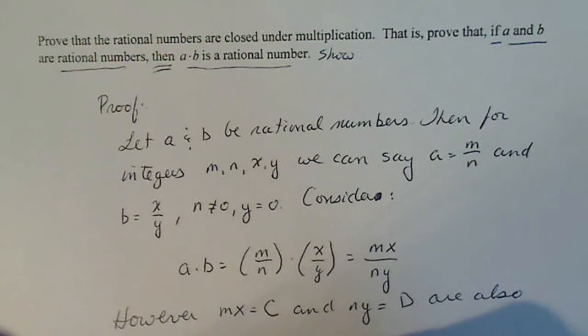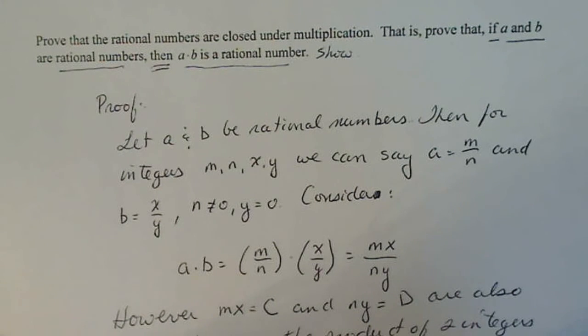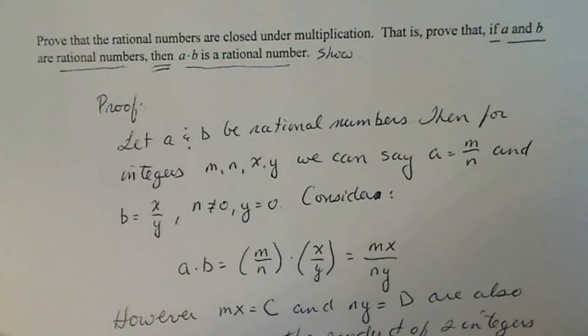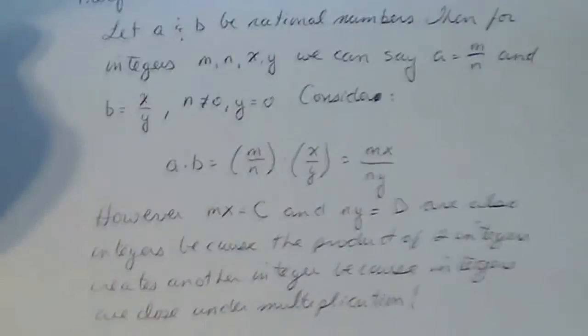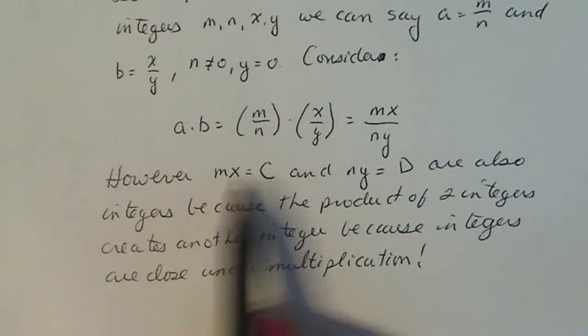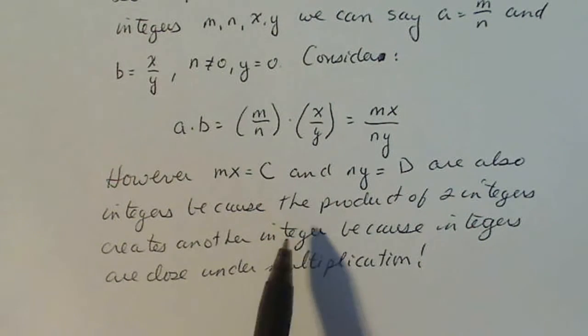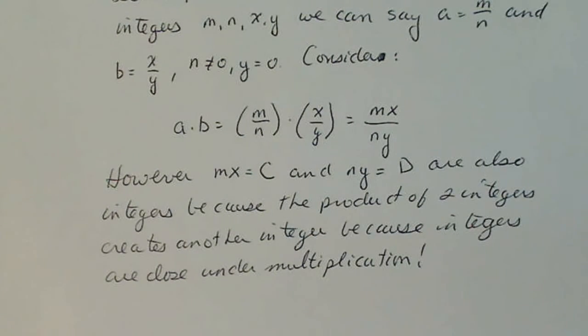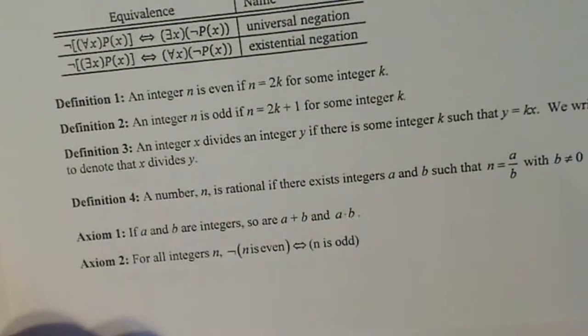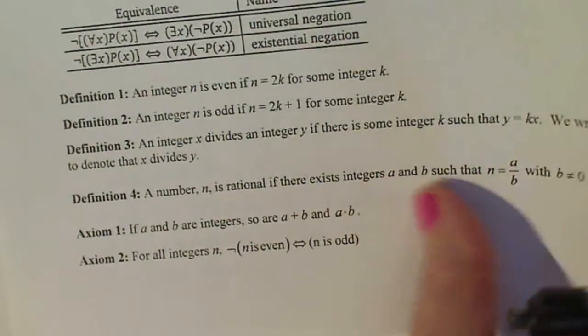Why? Make sure you state why. Because the product of two integers creates another integer because integers are closed under multiplication. The textbook that we use in discrete says that's an axiom. If A and B are integers, so are A plus B and A times B. So I'm using that fact here to make that statement.